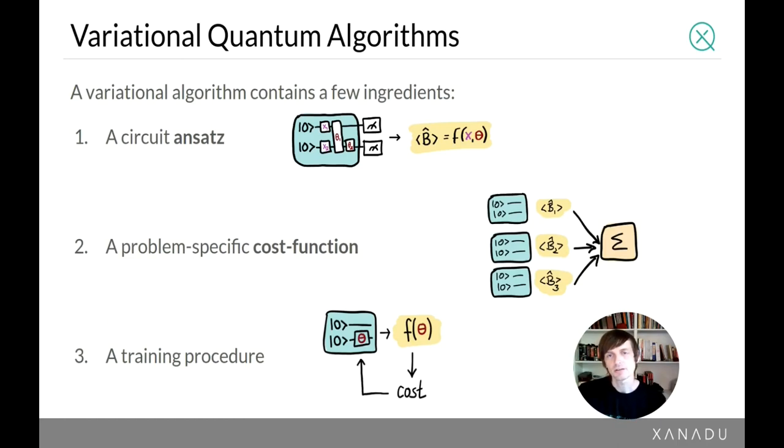A particular variational algorithm contains a few fundamental ingredients. First, you need to decide on a circuit ansatz - the structure and architecture of the circuit. We also need a problem-specific cost function that codifies a particular objective we want to minimize or maximize. And we need a training algorithm - I'd like to focus on gradient descent - that takes function computed from output measurements and updates the circuit's parameters based on that information.